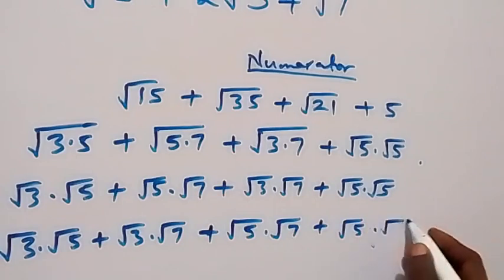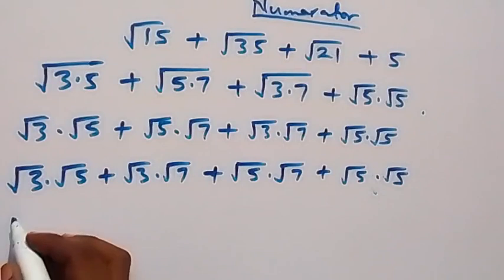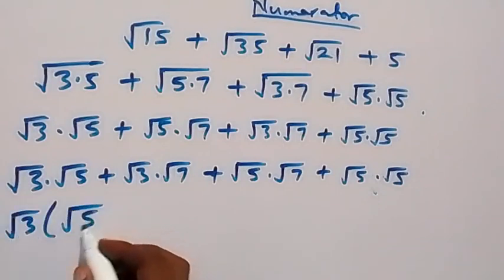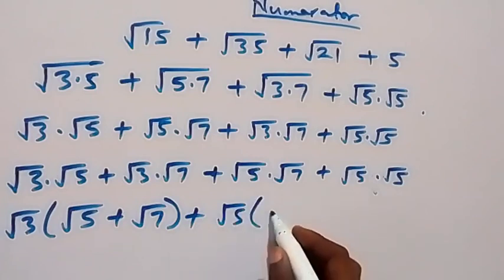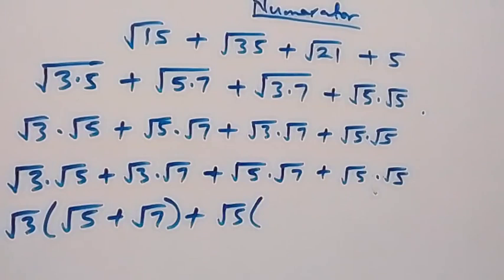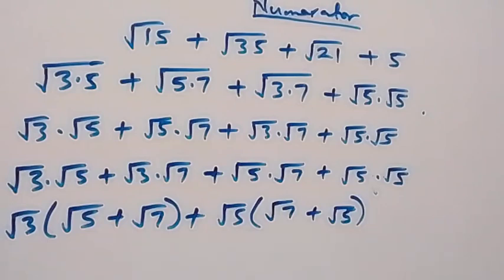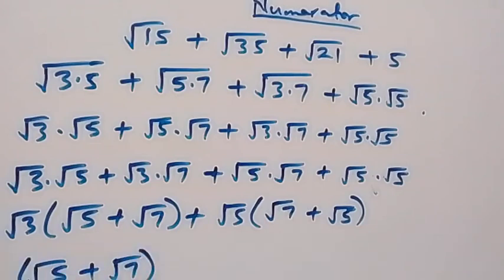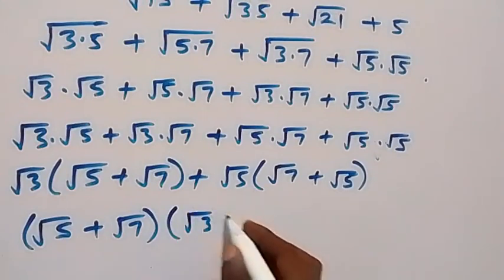From here we factor what is common out. Root 3 is common, so when we bring it out we have root 3 into bracket root 5 plus root 7, then plus here root 5 is common, so we have root 5 into bracket root 3 plus root 7. When we look at these two brackets we have the same thing: root 7 plus root 5 is the same as root 5 plus root 7. So we factor root 5 plus root 7 out, and what is left is times root 3 plus root 5.